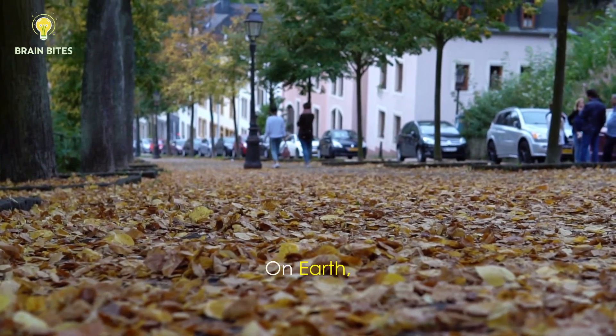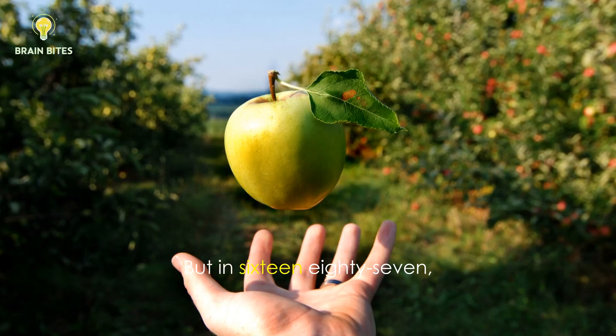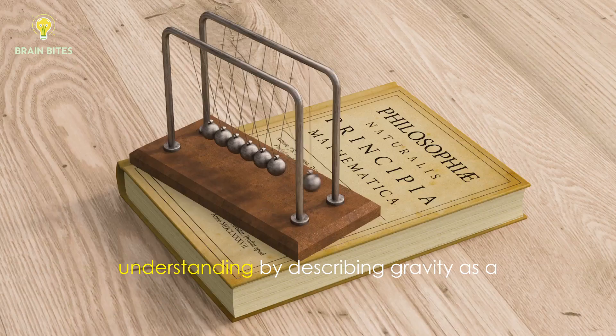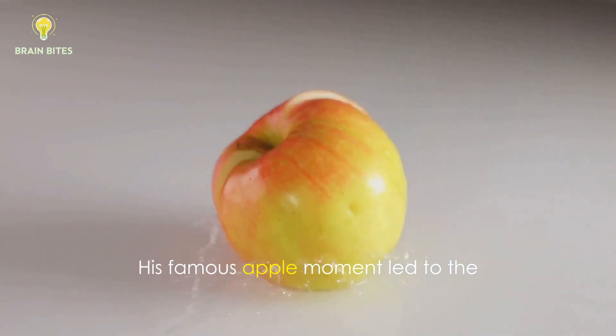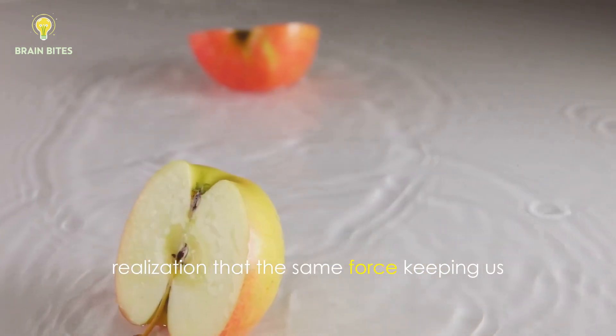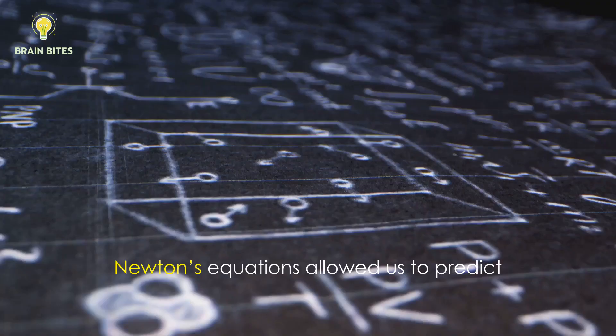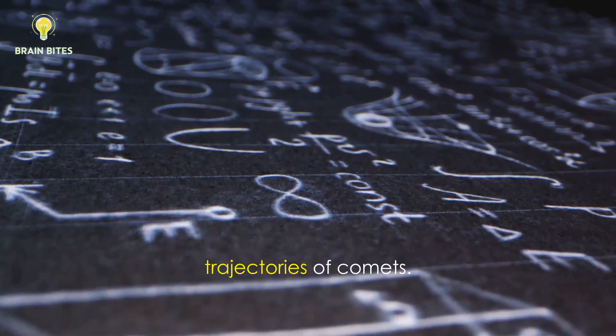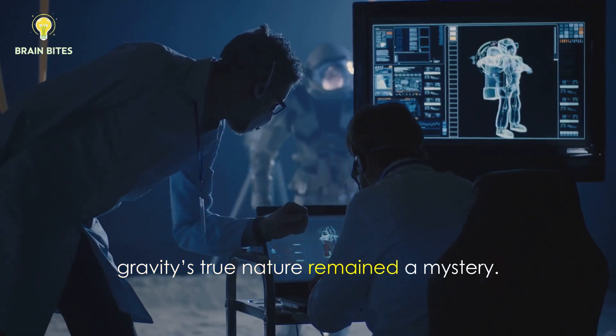On Earth, gravity's pull is something we take for granted. But in 1687, Isaac Newton revolutionized our understanding by describing gravity as a universal force. His famous apple moment led to the realization that the same force keeping us grounded also governs the motion of planets. Newton's equations allowed us to predict everything, from the tides to the trajectories of comets. Yet gravity's true nature remained a mystery.